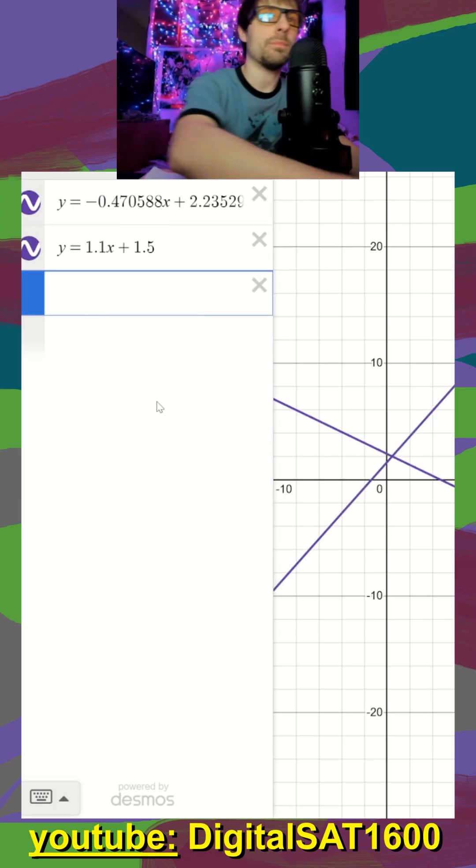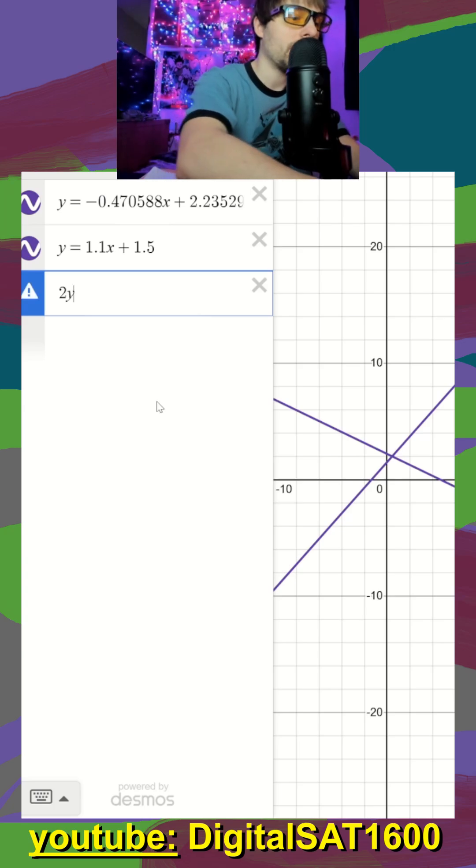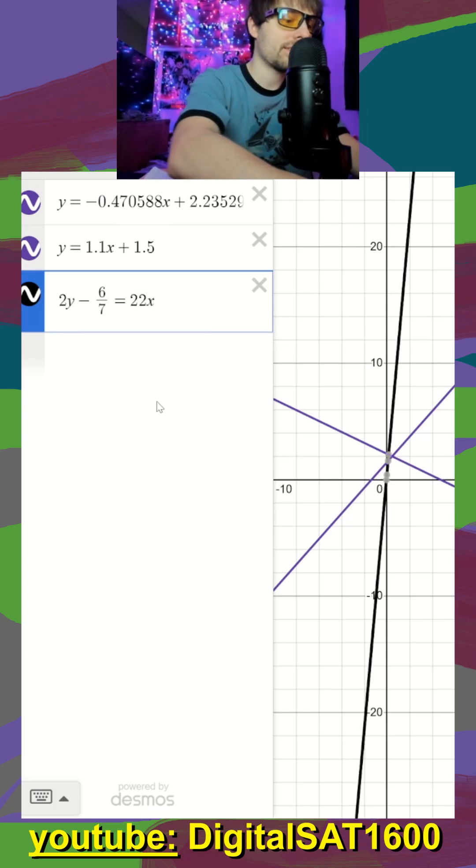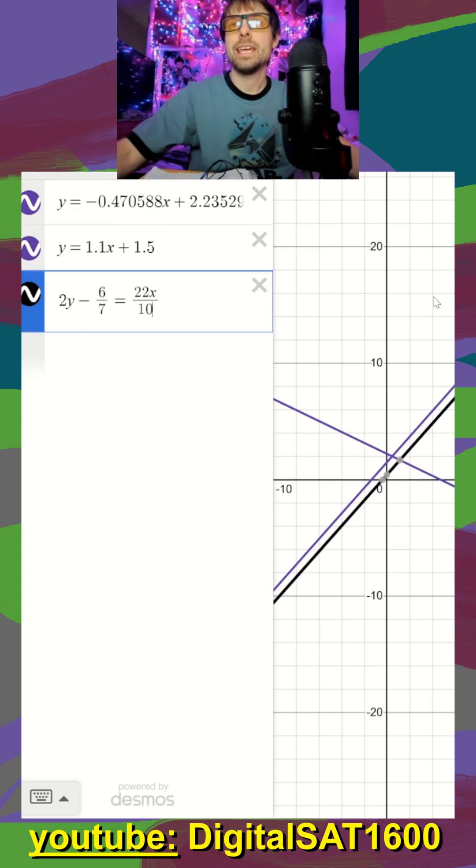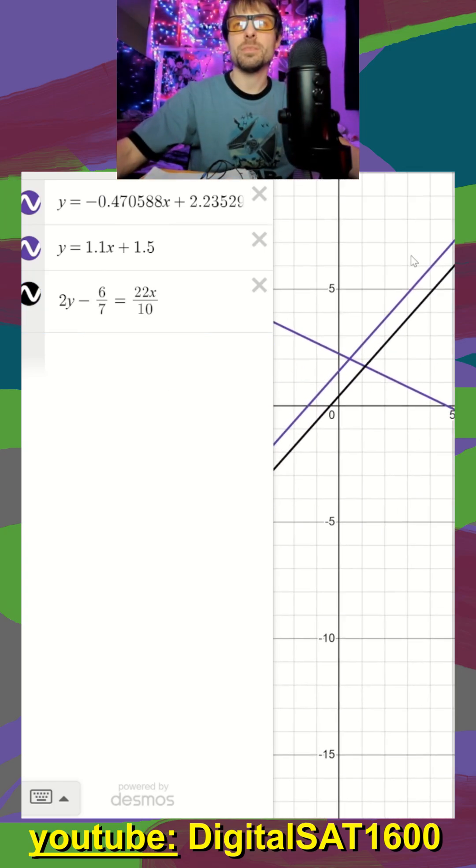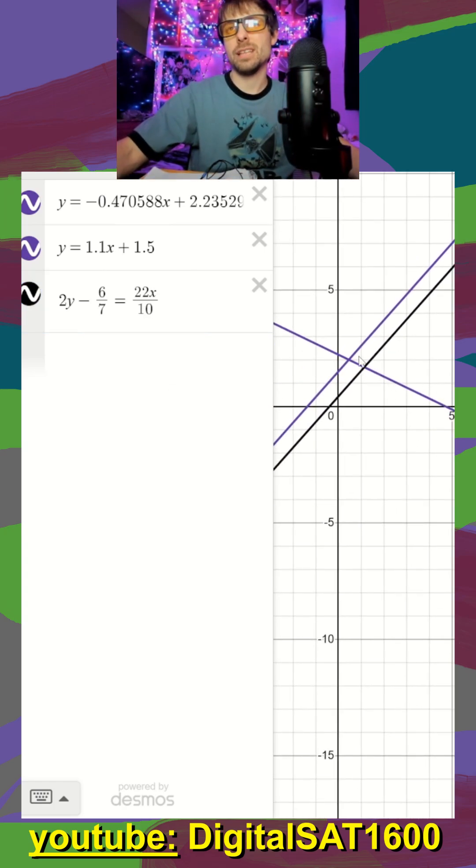And I'm going to type in my third equation here, 2y minus 6 divided by 7 is equal to 22x divided by 10. And it looks like I have a system here. We have this line intersecting both my other lines, and they kind of look parallel.